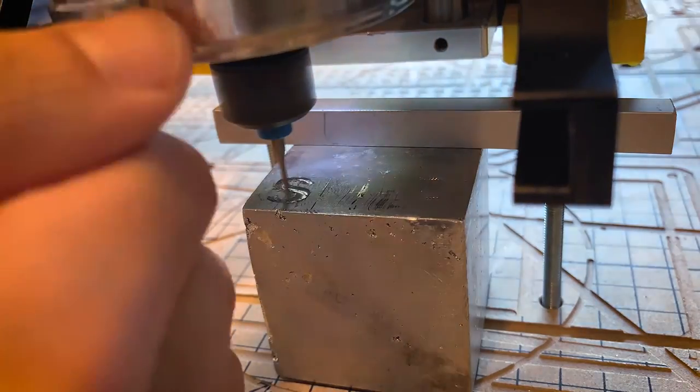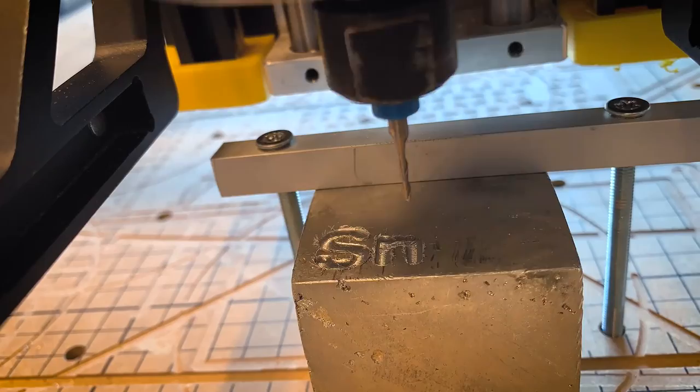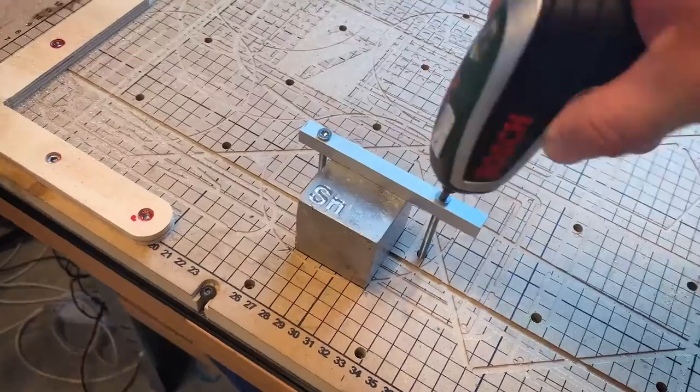Due to tin's softness and low melting point, we did very thin and light passes. This was to avoid any melting and softening of the material while engraving it.